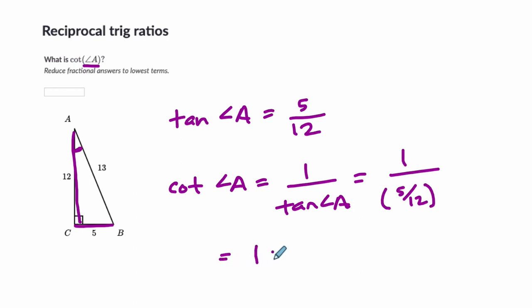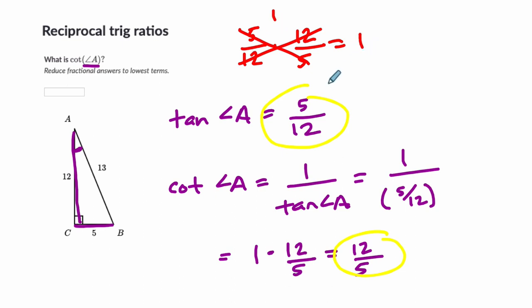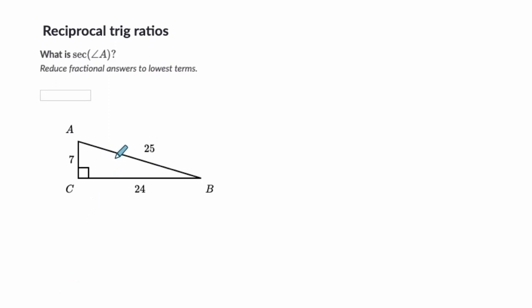When you divide by fractions, that means 1 times 12 over 5 — keep, change, flip — and you get 12 fifths. Notice right away that 12 fifths times 5 twelfths are reciprocals, because when you multiply them you get 1: 60 over 60 equals 1. So you don't have to write all those steps. If you find the tangent, just flip that fraction to get its reciprocal. The answer is 12 over 5. Sometimes you might have to reduce, so we'll look for that as well.